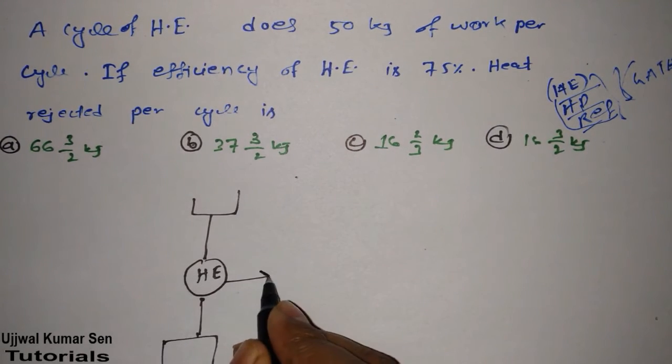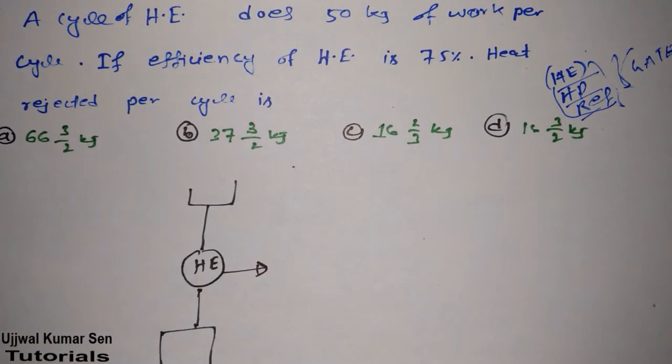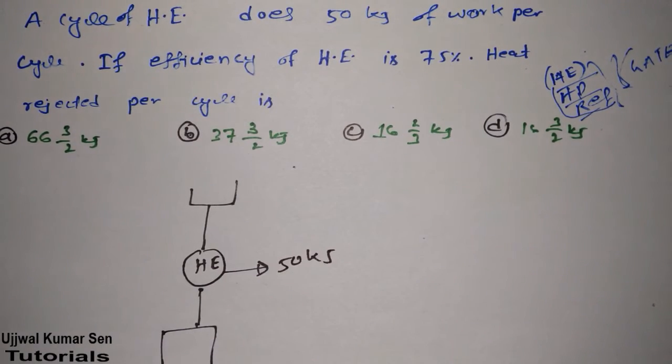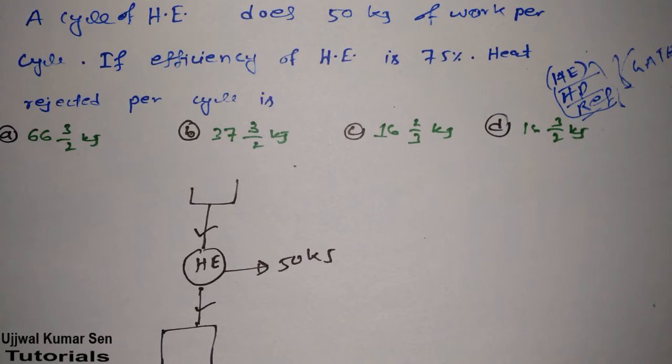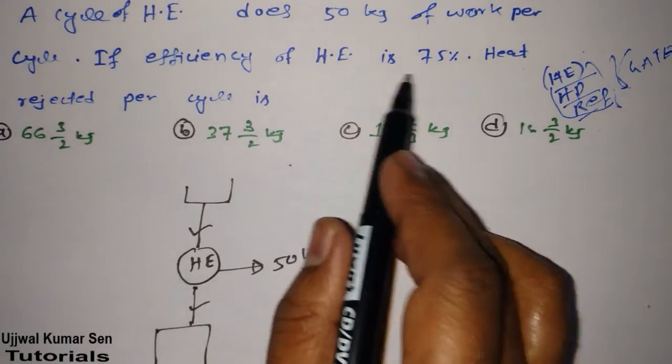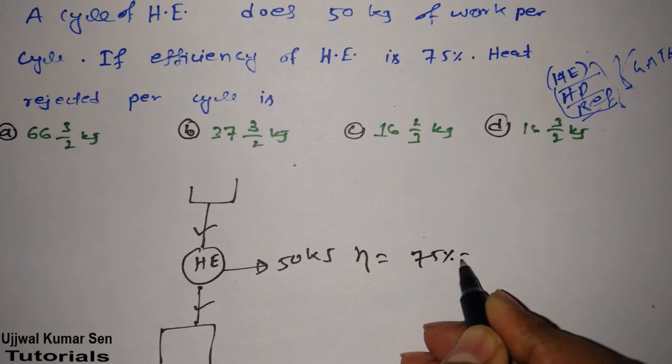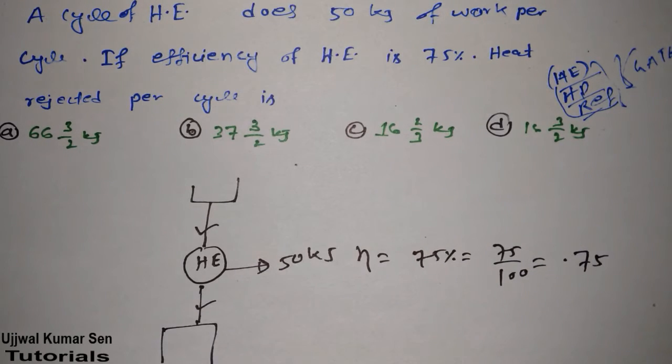What they have given in this question: a cycle of heat engine does 50 kilojoule of work per cycle. So work done is 50 kilojoule. The direction will be like this because this is a case of heat engine and this is a source, this is a sink. And efficiency of heat engine is 75%, that means 75 by 100, that means 0.75.